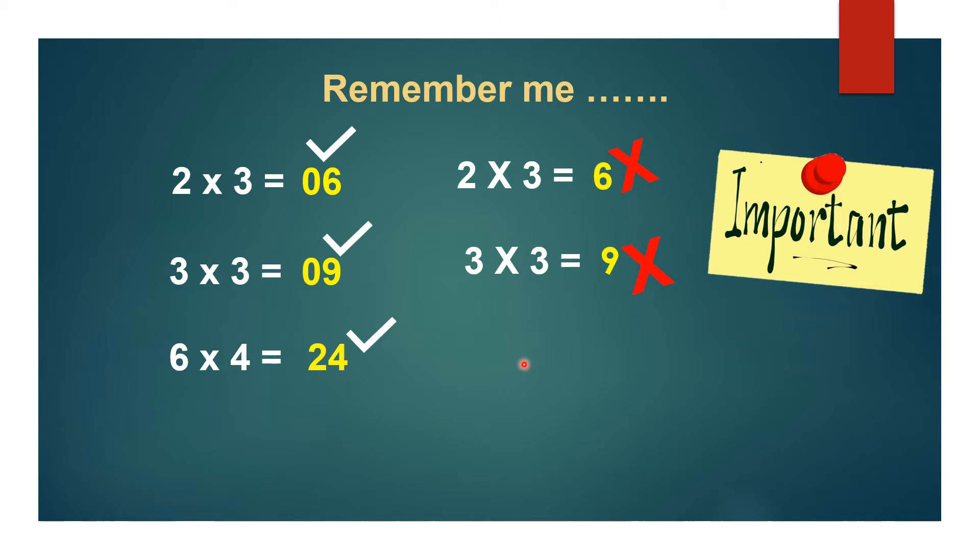If we consider 6 × 4 = 24, as it is you can write, and 3 × 9 = 27, as it is we can write because it is a two digit number. Only when we are getting single digit numbers, mention it as 04, 05, 06, and so on.